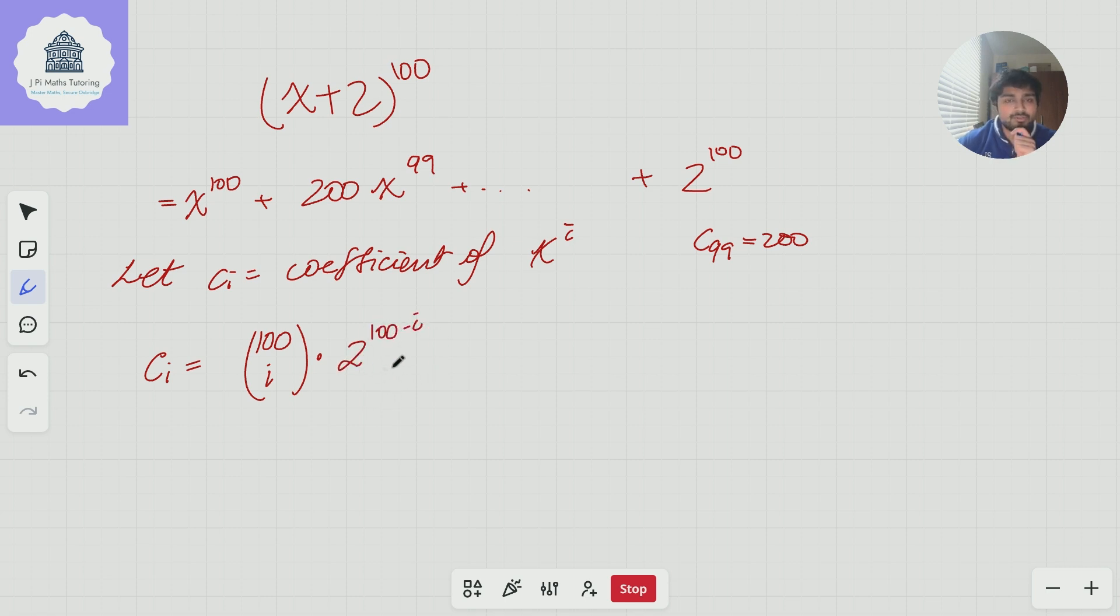Just to see why it's 2 to the 100 minus i, we can look at 99, for example. So c_99 is 100 choose 99 times 2 to the 1, which makes sense. So it's 2 times 100. So this is c_i.